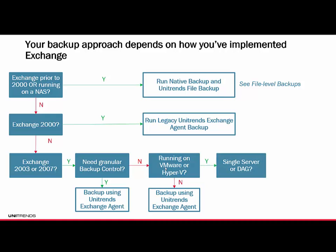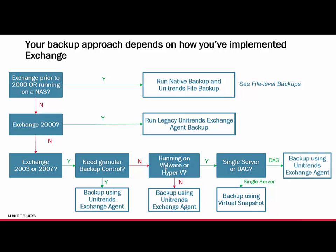If it is running on VMware or Hyper-V, whether it's a single server or running a DAG, you have a couple of options. If it's a single server, you can back it up using Application Aware during a virtual snapshot — just turn on Application Aware. But if it's running a DAG, you have to back it up using the Unitrends application agent for Exchange. There's a handy chart to help break that down depending on your version.